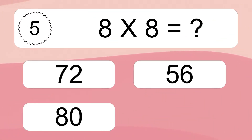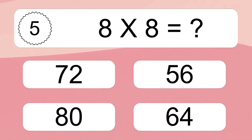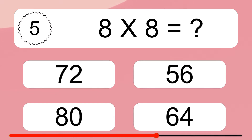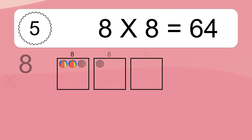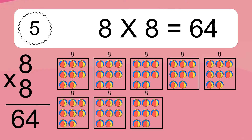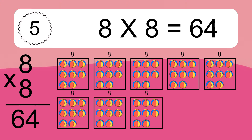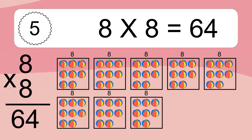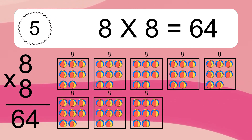Eight times eight equals what? Eight times eight equals sixty-four. We have eight boxes, and each box has eight colorful balls inside. If you count all the balls in all the boxes together, you will have eight times eight balls. This equals sixty-four balls.